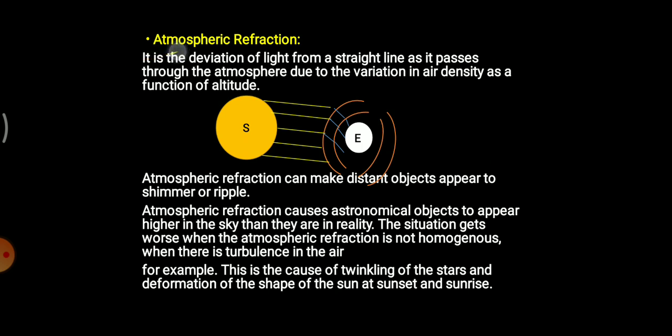Atmospheric refraction is the deviation of light when it passes through the atmosphere due to the variation in air density as a function of altitude. As you know, air density at different altitudes varies. Since density is varying at different altitudes, the atmosphere at different regions is also changing. Because of this variation in air density, when a ray of light passes through different air densities, refraction will occur.